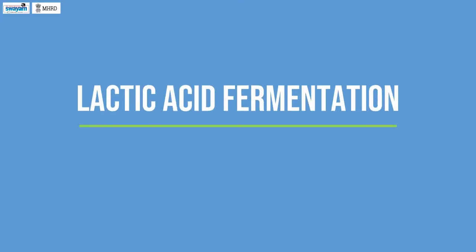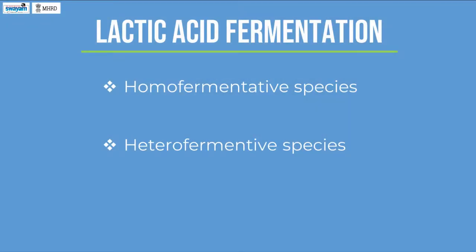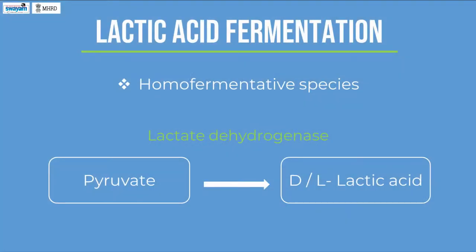Lactic Acid Fermentation. Lactic acid is obtained from lactic acid bacteria fermentation. Lactic acid bacteria are of two types based on their products: homofermentative species, which produce only lactic acid, whereas heterofermentative species produce lactic acid along with certain other products such as ethanol and carbon dioxide. In the homofermentative pathway, pyruvate from glycolysis is converted to D- or L-lactic acid in the presence of lactate dehydrogenase.